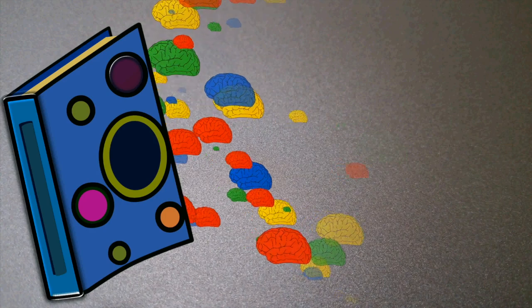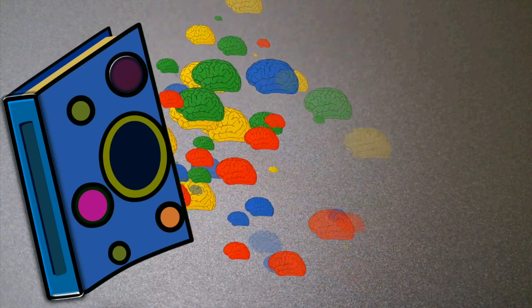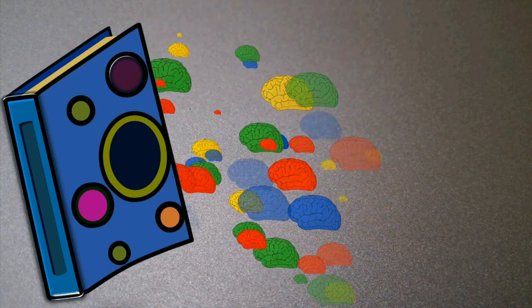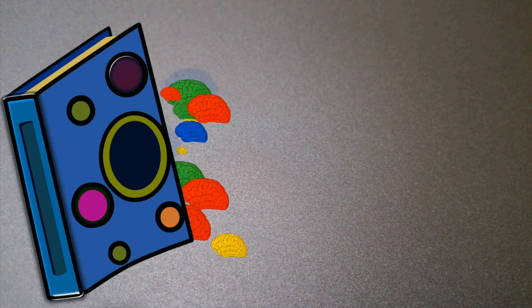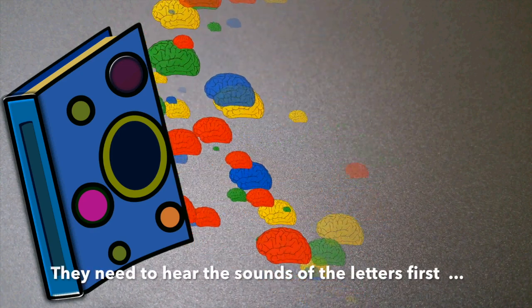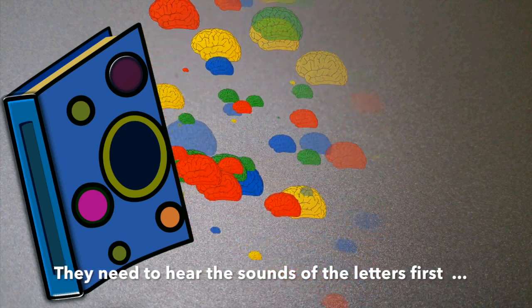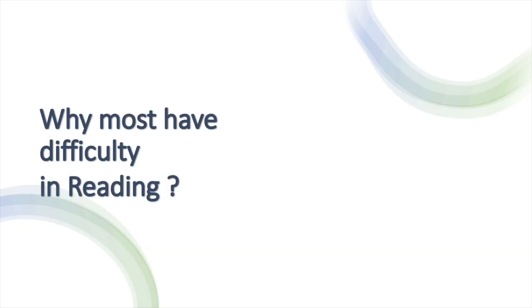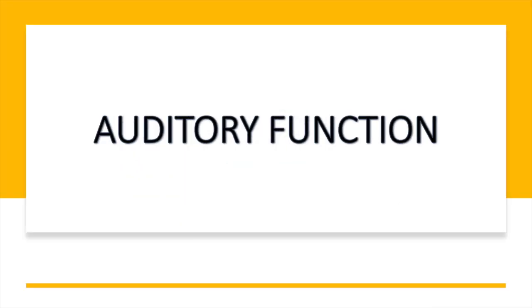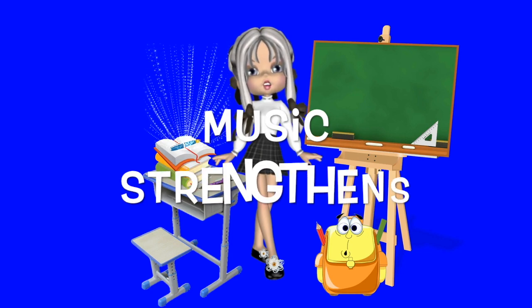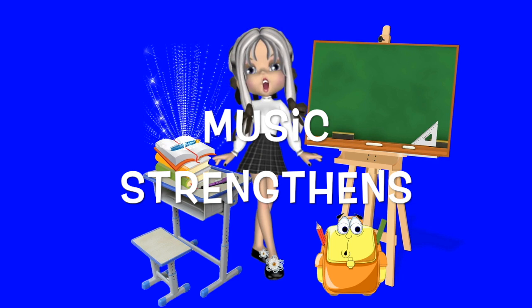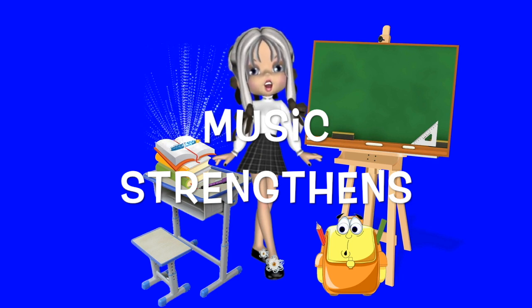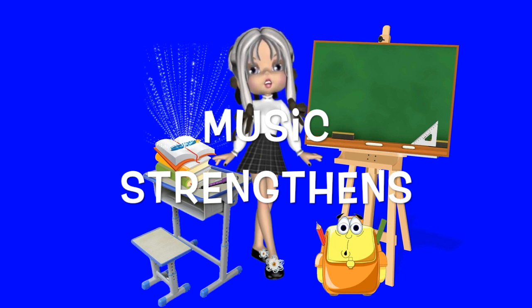Because when a child learns to read, they use their ears first and then their eyes. They need to hear the sounds of the letters first before they can pronounce the words, which requires processing sounds, and that is an auditory function. You might be wondering why in preschool or kindergarten there is lots of singing happening.